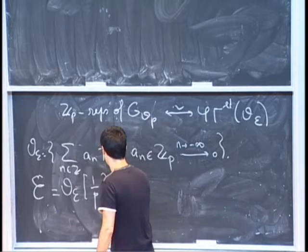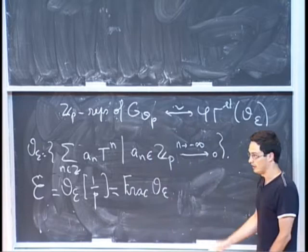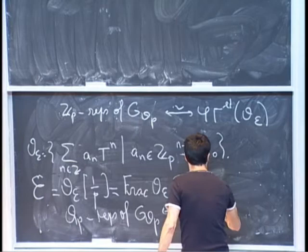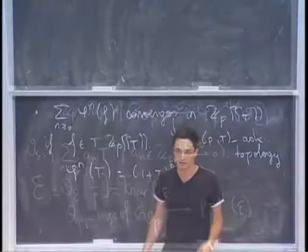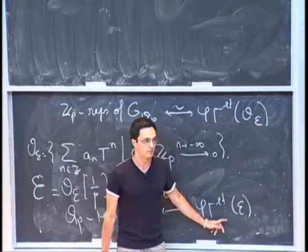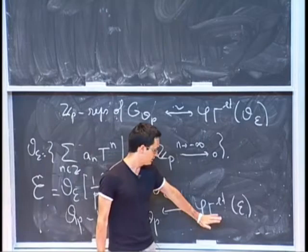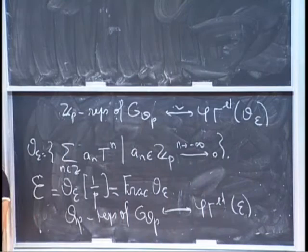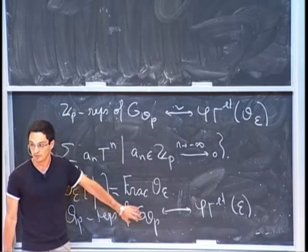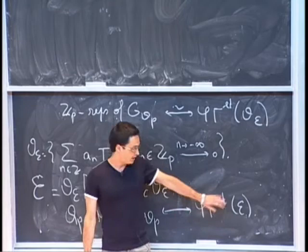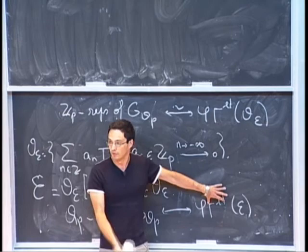Then you have an equivalence of categories between Q_P representations of G_{Q_P} and étale phi-gamma modules over E, except that now you have to be a little bit careful when defining what an étale phi-gamma module is, because it's not the obvious definition. Every time I defined étale phi-gamma modules, the condition that it is étale was that the image of Frobenius spans the whole module, or in other words, the linearization of Frobenius is an isomorphism. This is no longer the case if you take E. Q_P representations have stable lattices by compactness of the group G_{Q_P}, so you should have an analog of the existence of stable lattices on the phi-gamma module side.